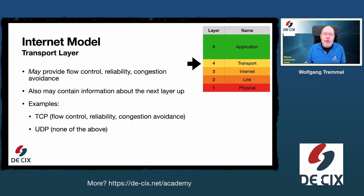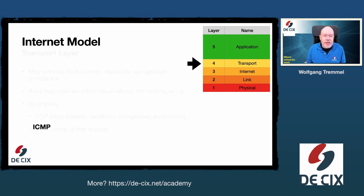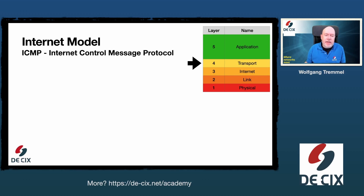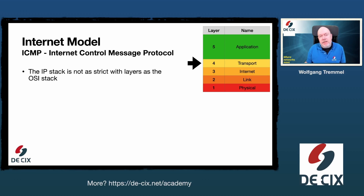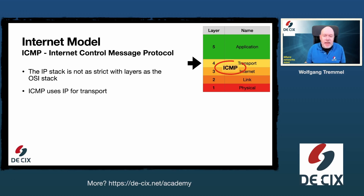On this layer we also have a protocol called ICMP — the Internet Control Message Protocol. Keep in mind that the IP stack is not as strict with layers as the OSI stack, which I introduced in the second video of this series. ICMP also uses IP for transport but it does not have anything above it.